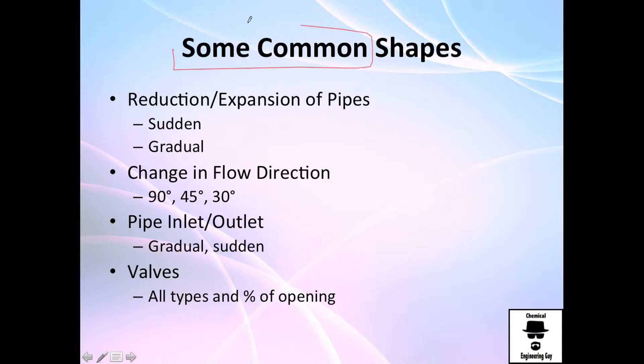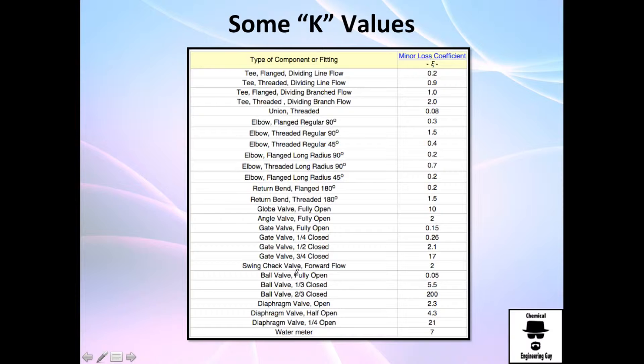There are many common shapes we have in the market. For example, reduction and expansion of pipes is very common. It's very easy to find them. Change in flow direction, which is also elbows we have. We have even return 180 degree, which is this elbow right here. Pipe inlet and outlet is very useful, especially if you have a tank. There's a friction loss when it goes through this here, and there's a friction loss as well when you deliver to the tank. And more importantly, we have K values for valves. We need K values for valves and for its percentage of openness. It's open to 50% is going to be different than that of the 20%. So let me show you many K values from internet, databases, books, and so on.